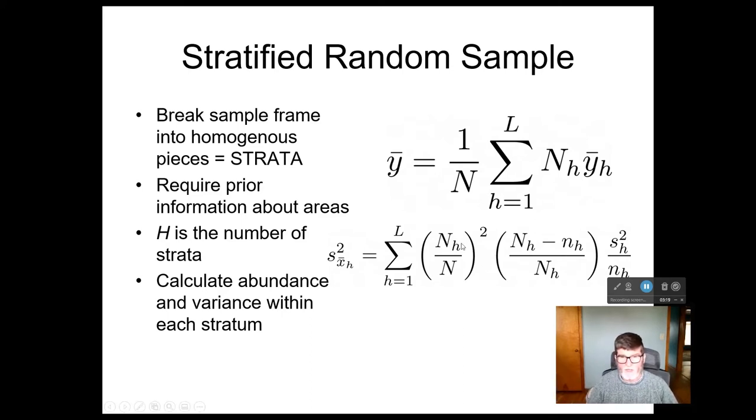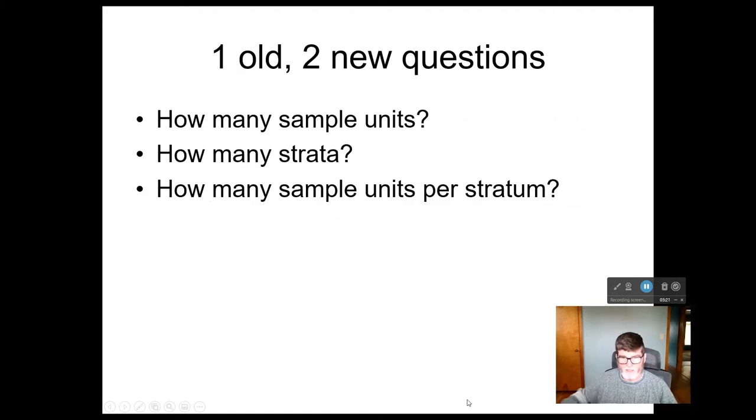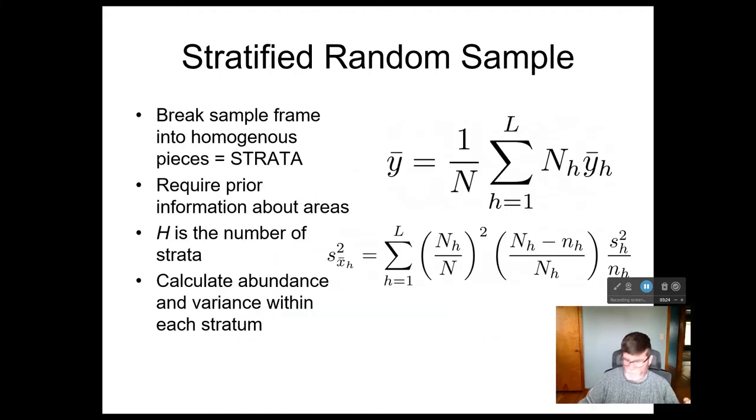And then we multiply by again, this proportion NH over N. But this time, because we're still dealing with the variance, we square it and we add them all up. This additional term in here is what's called the finite population correction. And that's because when we're dealing with stratified samples, we often switch to sampling without replacement. And so we have to put in this finite population correction term to account for that.